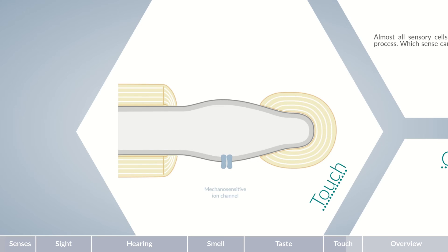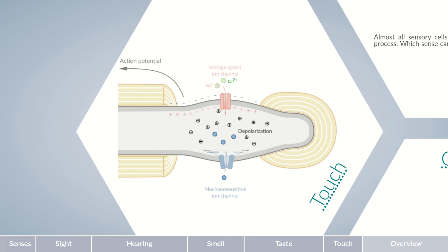Tactile cells have mechanosensitive ion channels for perceiving stimuli — channel proteins located in the plasma membrane, with some connected to the cytoskeleton or extracellular matrix. As a result of mechanical stimuli, the channel proteins deform and open, enabling the influx of cations into the cell. This positive polarization leads to the opening of voltage-gated channels, causing an even greater influx of cations, mainly sodium and calcium, ultimately depolarizing the cell and forming an action potential transmitted to downstream neurons.